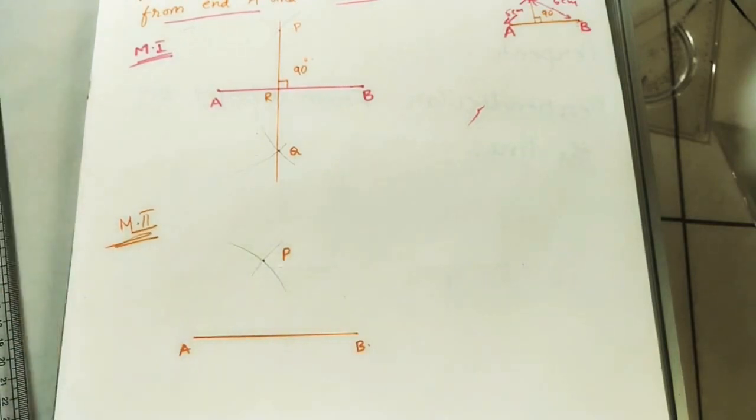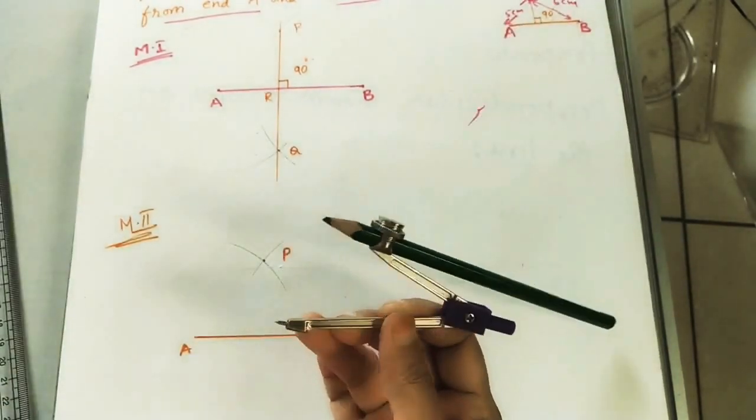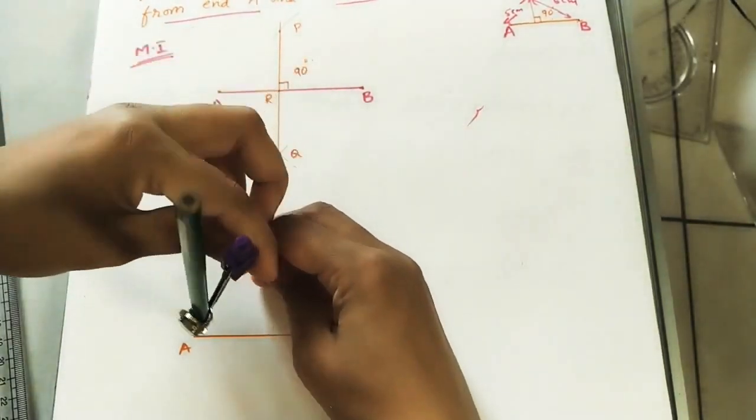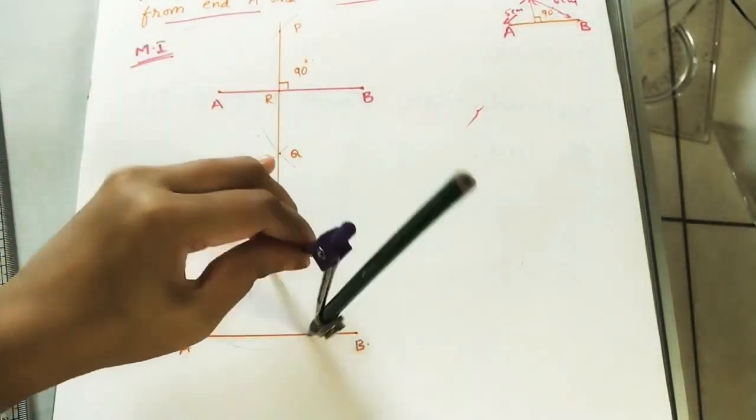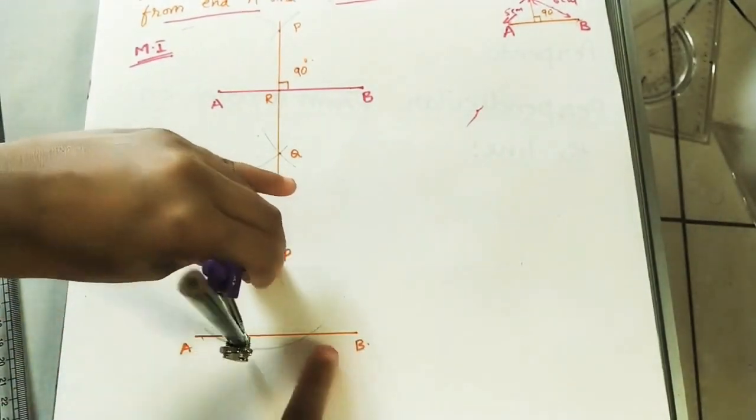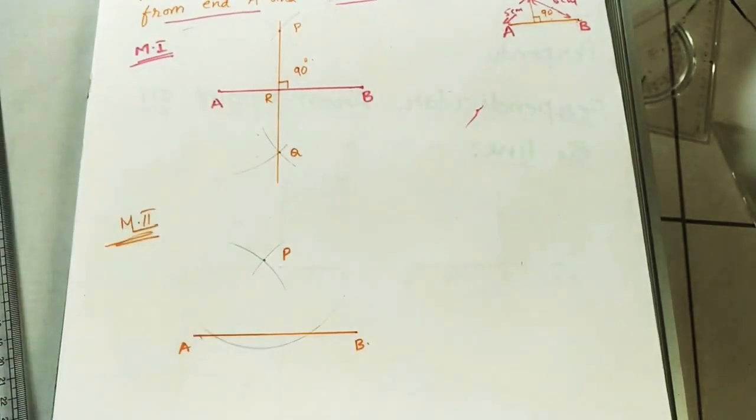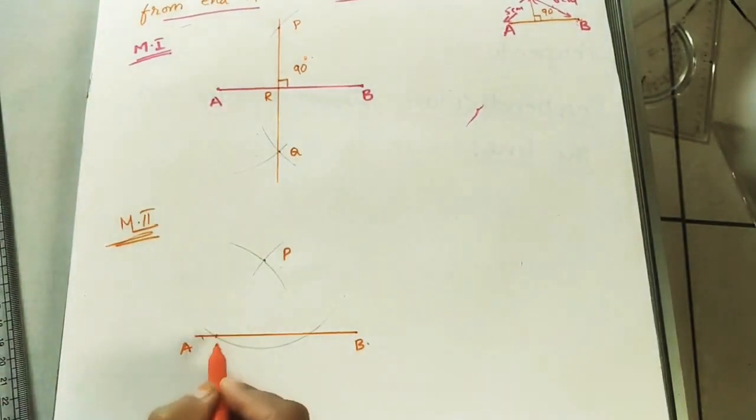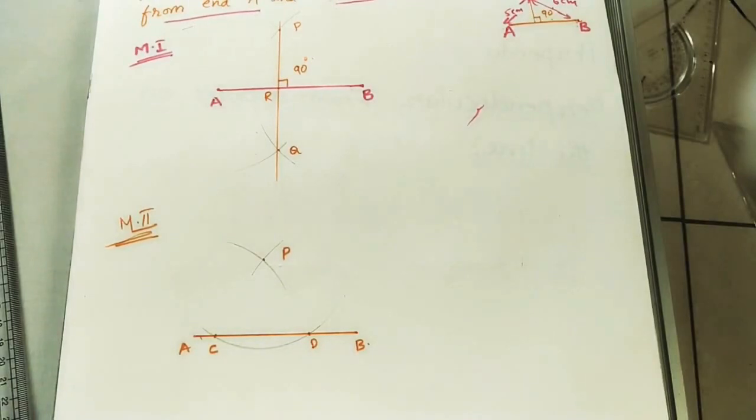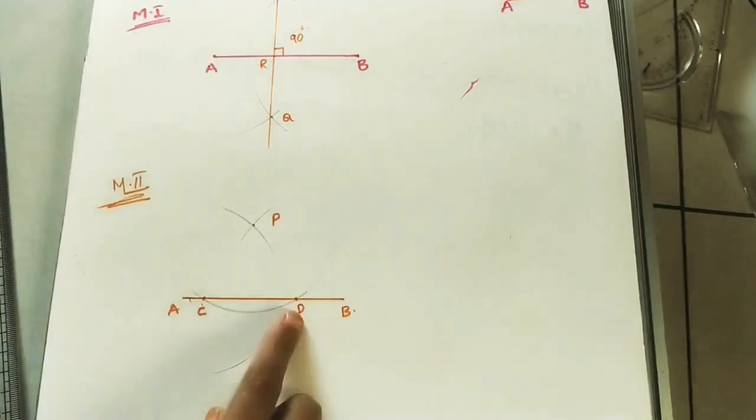After that, in this method, take some radius, any radius, not bigger one. So, from P, do an arc on the AB line. Just do an arc here which should intersect AB line at two points. Now, whatever intersection points are coming, I am taking C and D. And then, whatever arc is coming, it is CD arc. Bisect this arc.